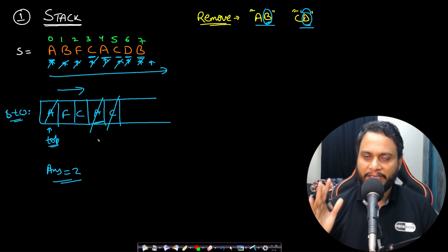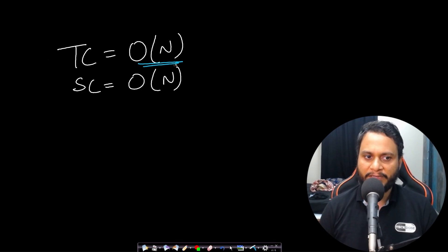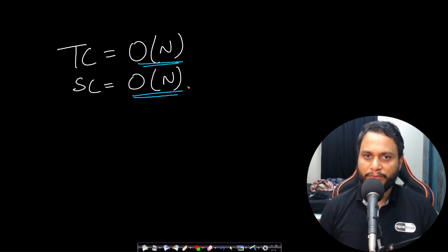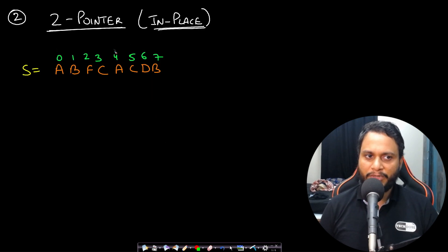This is an intuitive solution. The time complexity is O(n) and the space complexity is also O(n) because we are using a stack. We can do better — we can do the entire algorithm in place, making the space complexity O(1) while the time complexity remains O(n). That can be done by using a two pointer in-place approach.